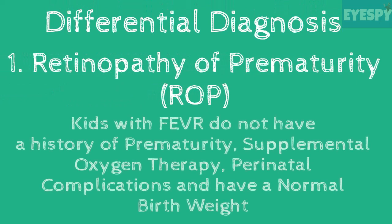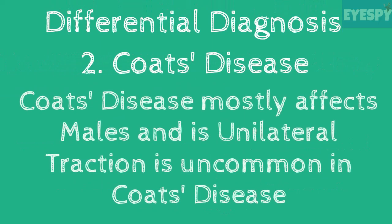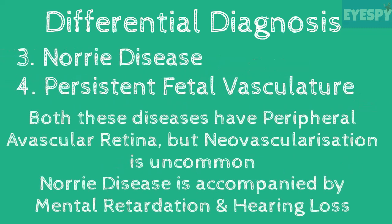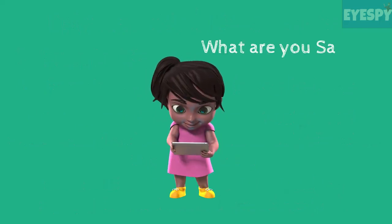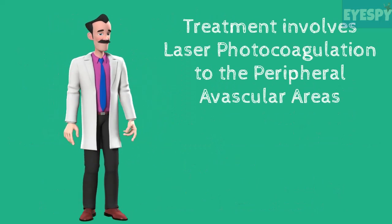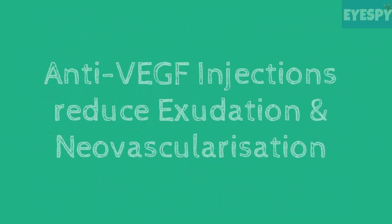Retinopathy of prematurity is the first differential of FEVR, but kids with FEVR are born full-term and have a normal birth weight with no history of perinatal complications or supplemental oxygen therapy. Coats disease affects mostly males and is unilateral without traction. Norrie disease presents with mental retardation and hearing loss. The treatment involves laser photocoagulation to the peripheral avascular areas, while anti-VEGF injections reduce exudation and neovascularization.